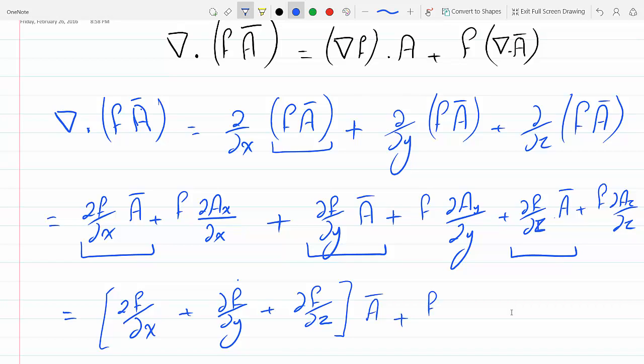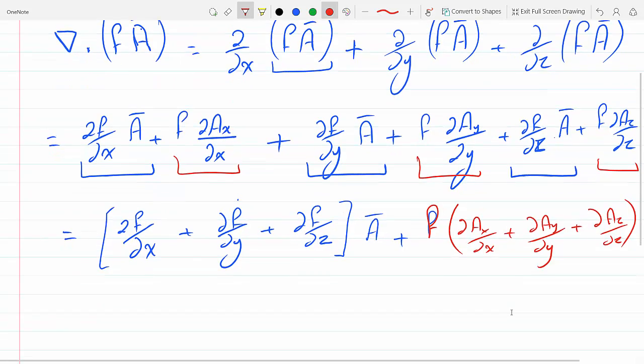I will factor f from these: dAx over dx plus dAx over dx plus dAy over dy plus dAz over dz. And this whole thing is multiplying f.